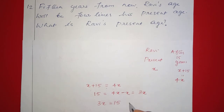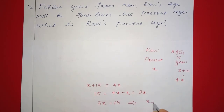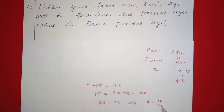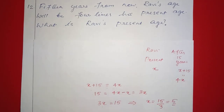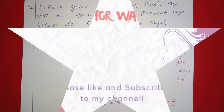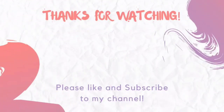This implies x equals 15 divided by 3, which equals 5. So Ravi's present age is 5 years.